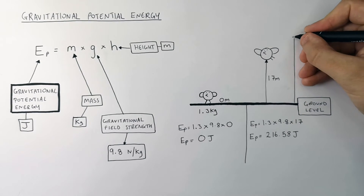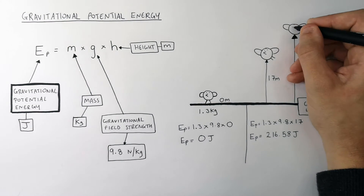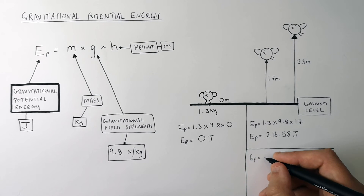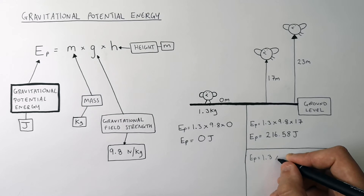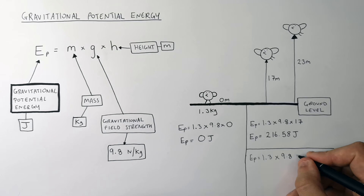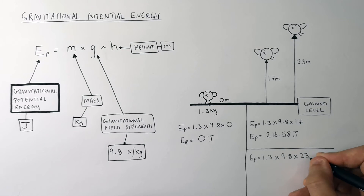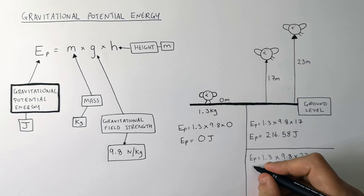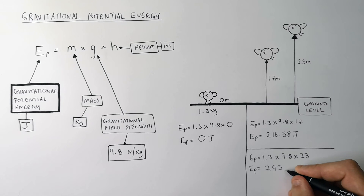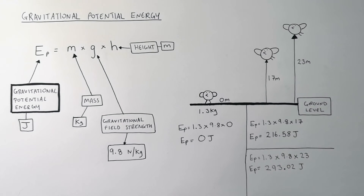The bird flies a little bit higher — it is now 23m above ground level. To work out the new gravitational potential energy stored in the bird, you do 1.3kg times 9.8N per kilogram times 23m, which gives a gravitational potential energy of 293.02 joules. So as you increase the height experienced by a mass, you increase the gravitational potential energy stored in that object.